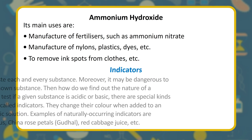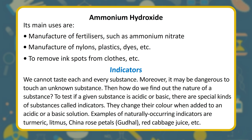We cannot taste each and every substance — moreover, it may be dangerous to touch an unknown substance. To test if a given substance is acidic or basic, there are special substances called indicators. They change their color when added to an acidic or a basic solution.